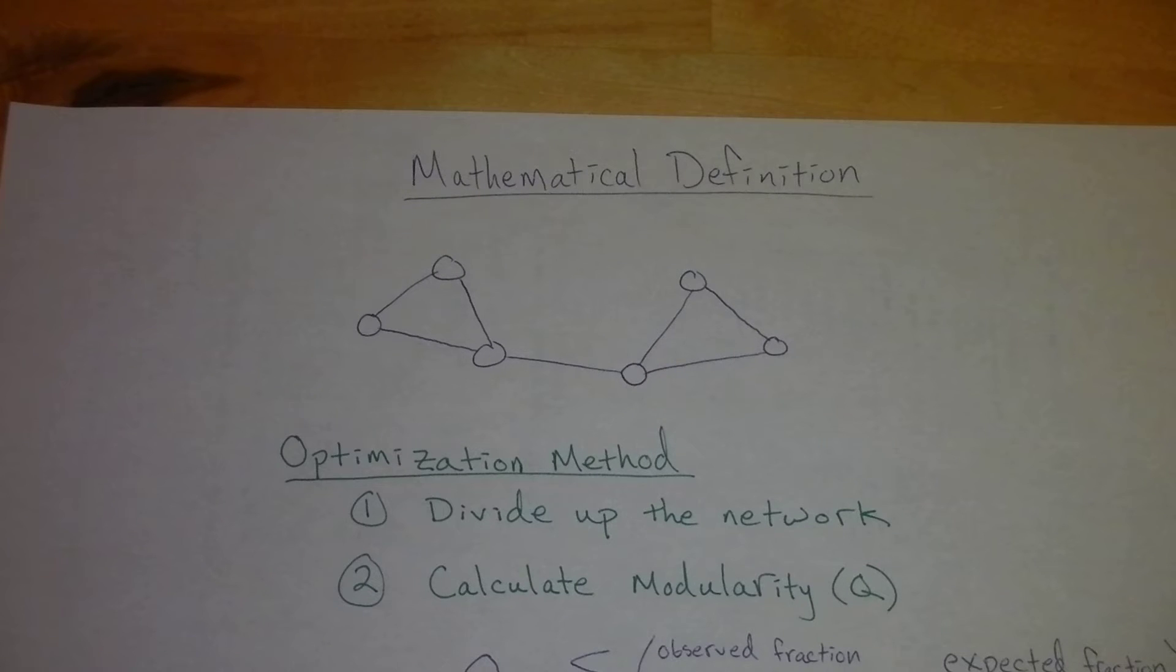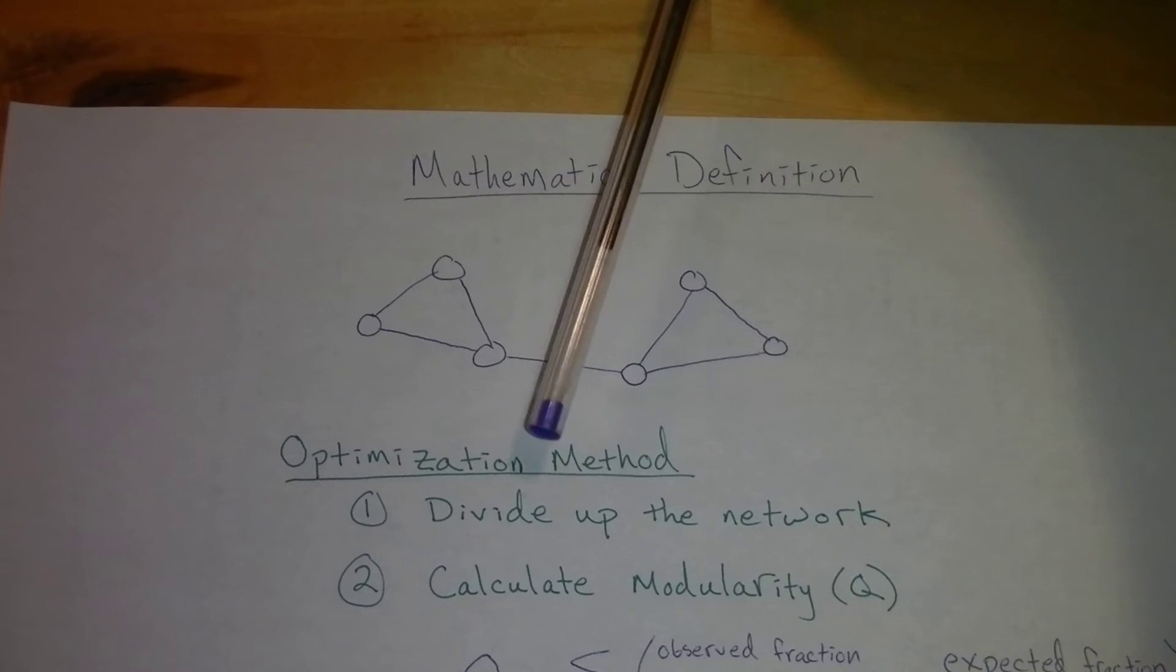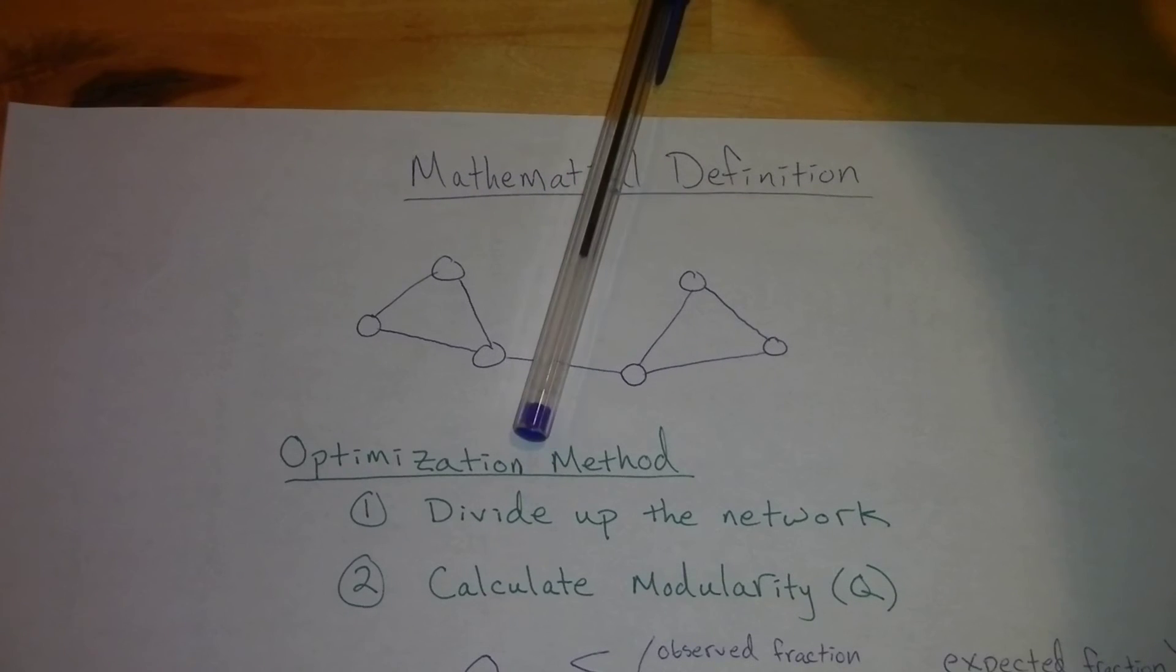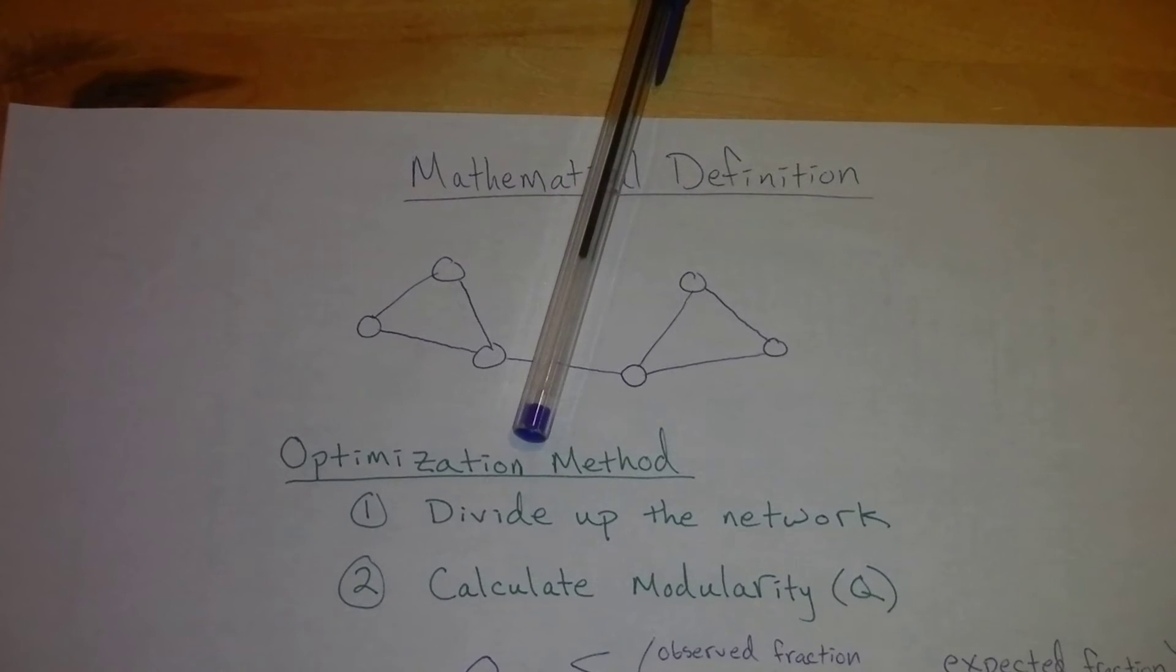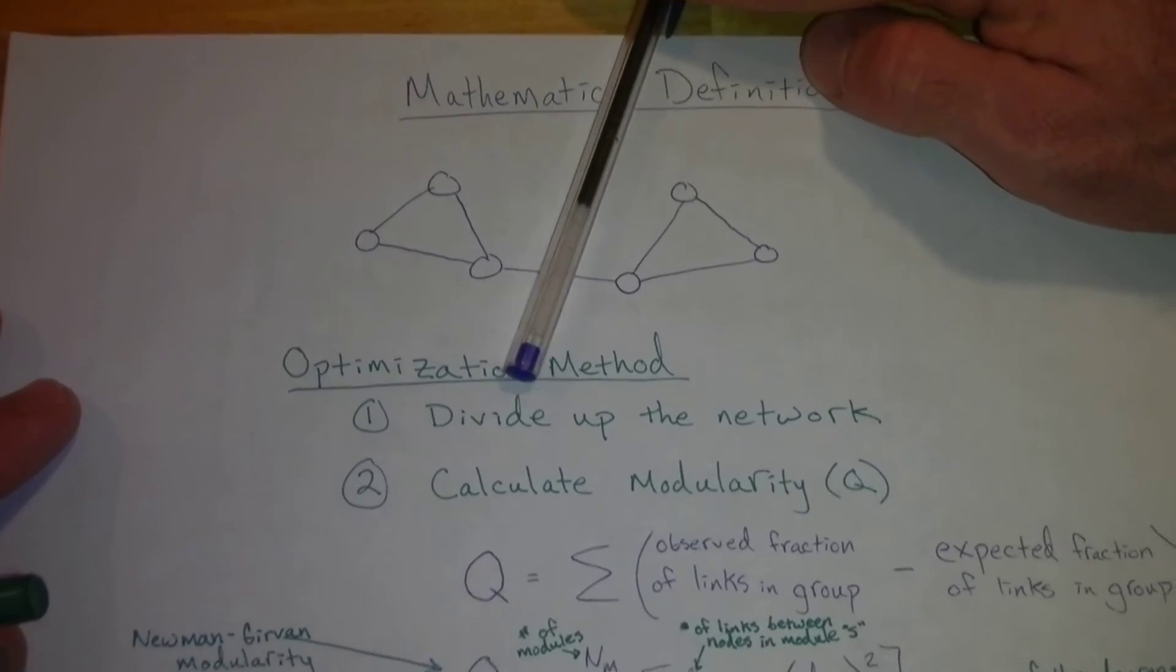The first thing that you would do for calculating modularity is pick a way to partition up the network. For example, in this network up here, we'll create a partition right here. Seems to be a good partition. And then we calculate the modularity based on that partition.